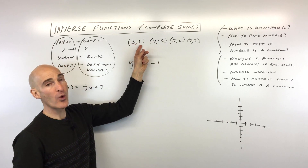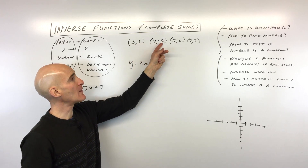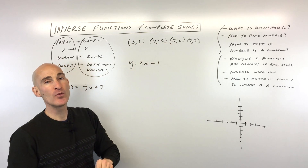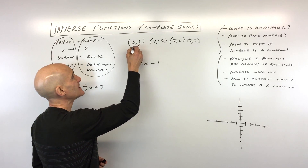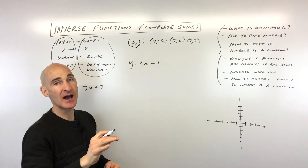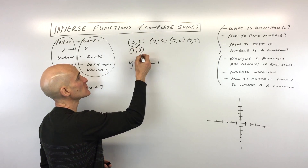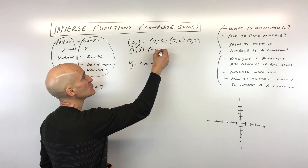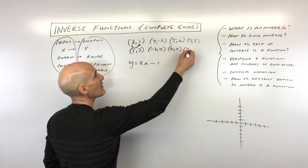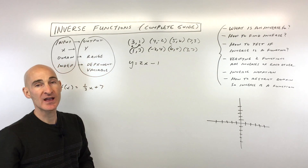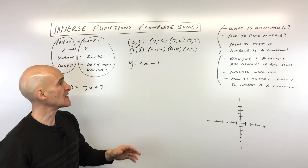You can see three is mapping to one, because x is the input and y is the output. Four is mapping to negative two, etc. If you wanted to find the inverse function, you would interchange the inputs and outputs — the x's and the y's. So we can write the inverse as: one→three, negative two→four, six→five, three→seven. You're just interchanging the input and output — that's the simplest example.